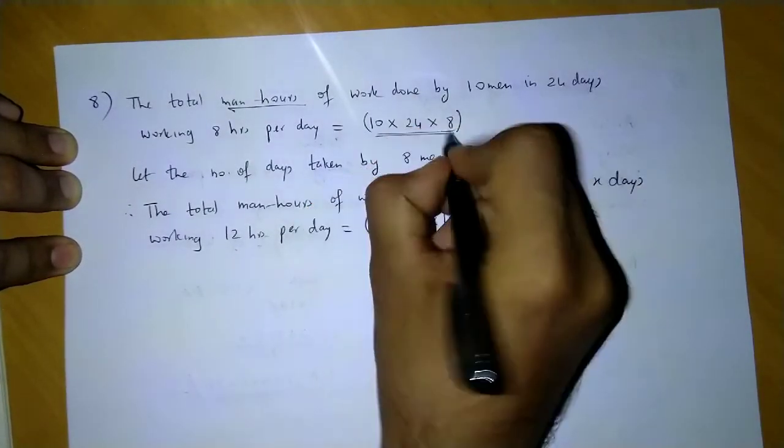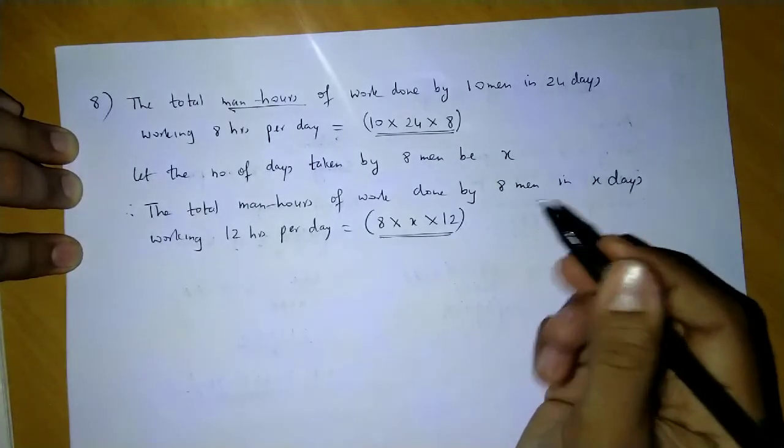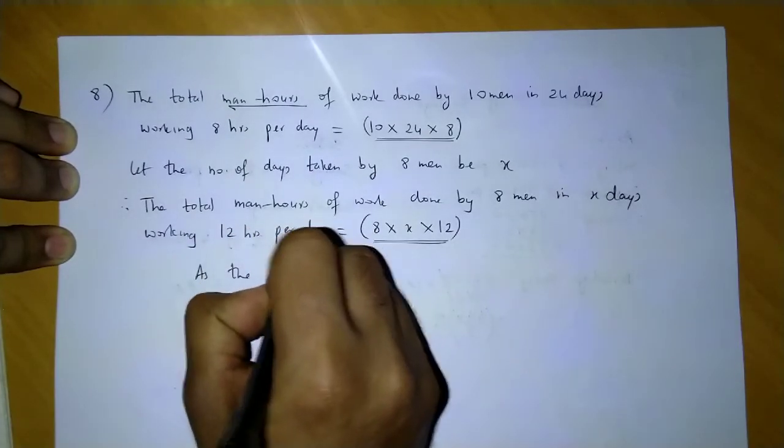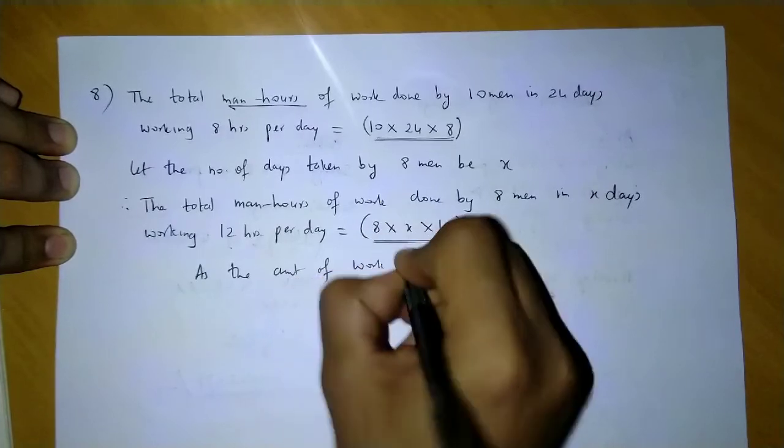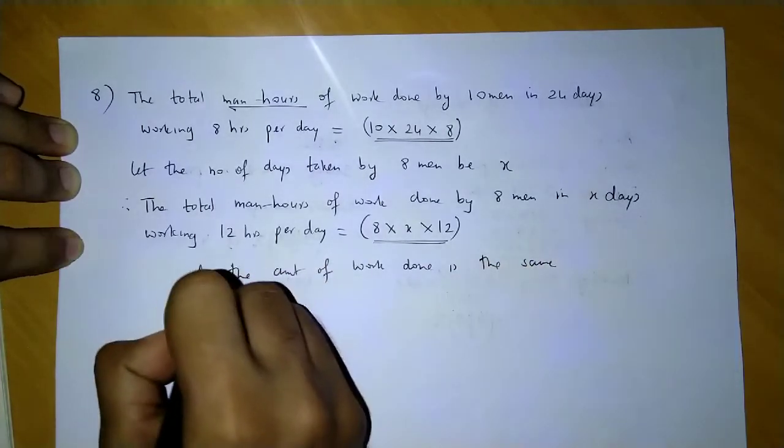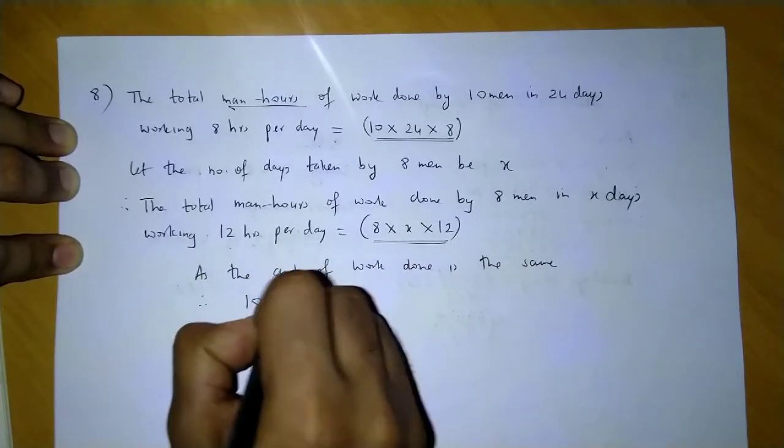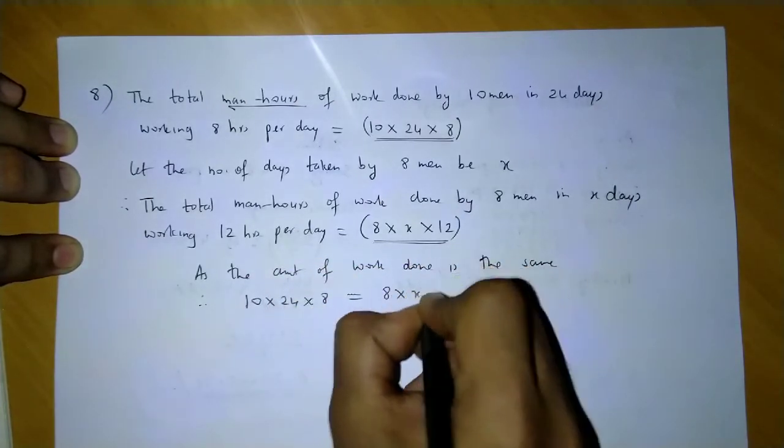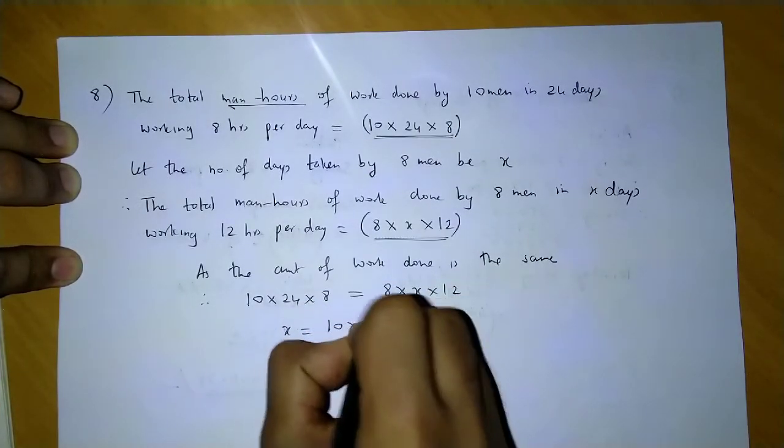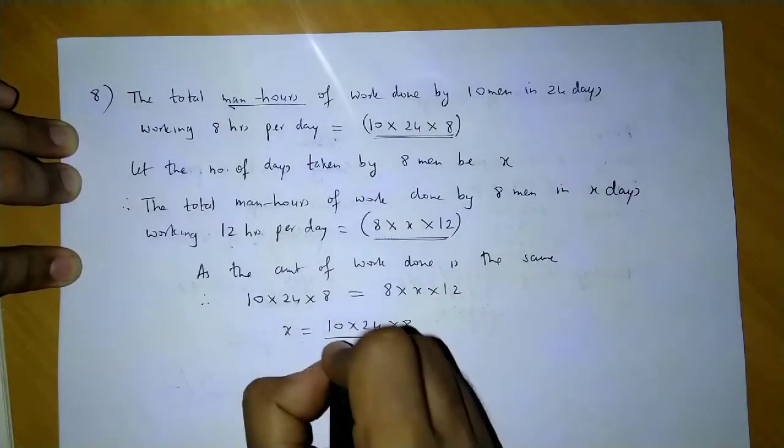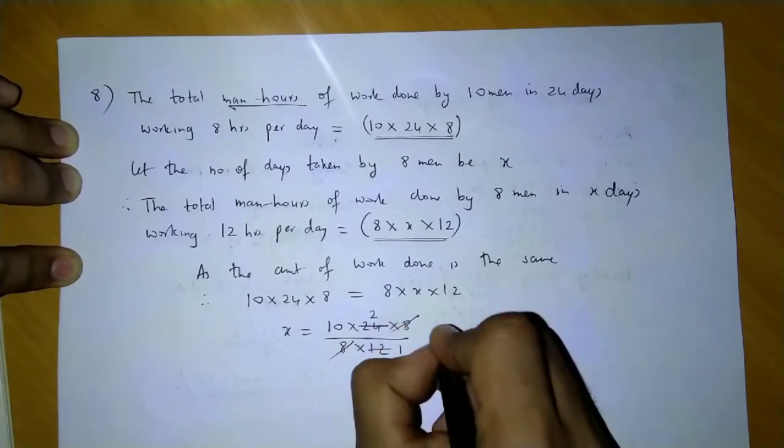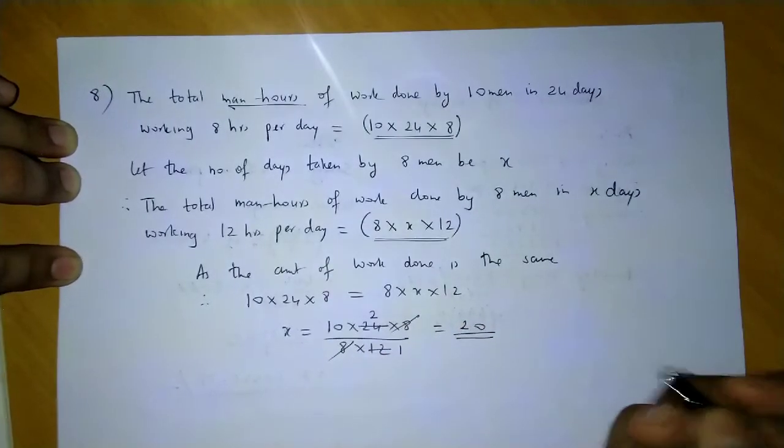So here there is so many man hours of work, here there is so many man hours of work. Now we know that the amount of work done is the same. So we say, as the amount of work done is the same, therefore we could say 10 × 24 × 8 equals 8 × x × 12. If I simplify this I will get 10 × 24 × 8 divided by 8 × 12. So 8 gets cancelled, and the answer is 20.